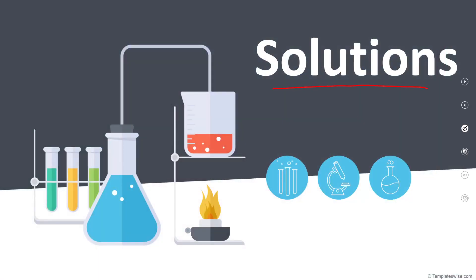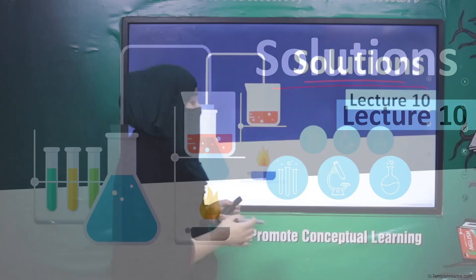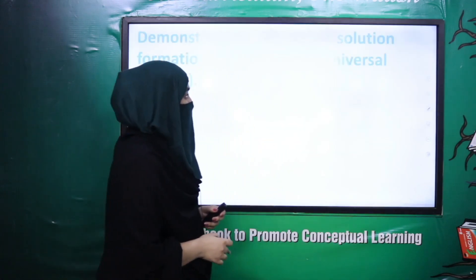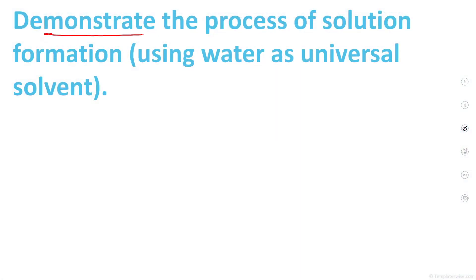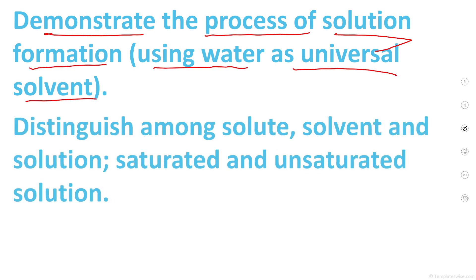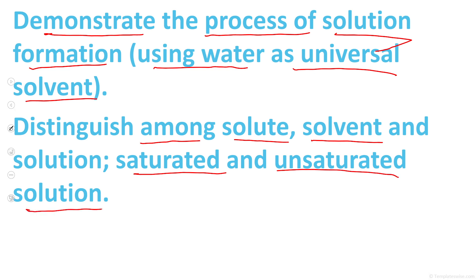Aaj hum is chapter ka whole review kerne waale hain ke hum ne is chapter mein kya kya seekha. The first objective is to demonstrate the process of solution formation using water as universal solvent, and to distinguish among solute, solvent, solution, saturated and unsaturated solution.